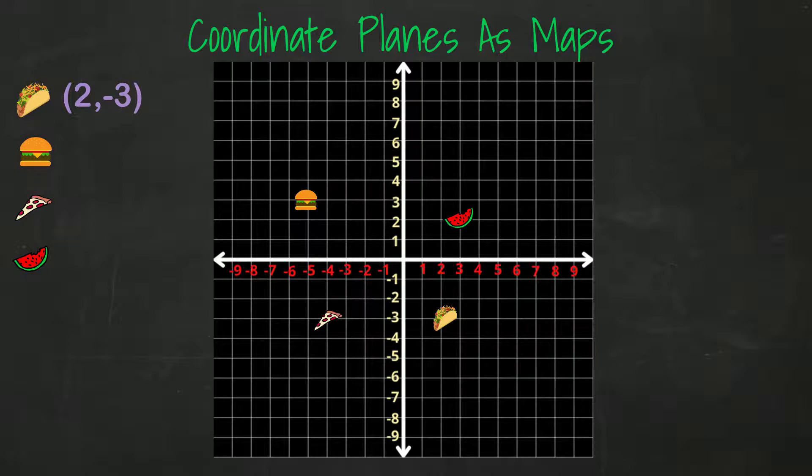Let's look at the next item on the map, and that's the burger. The burger is in quadrant 2, which means the x-value will be negative and the y-value will be positive. We look at the x-axis and see we need to go to the left of our origin five spaces. It is up the y-axis three spaces from there. The coordinate for the burger is negative 5, positive 3.